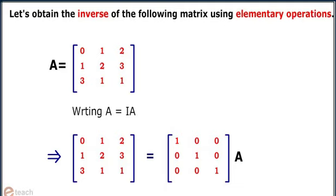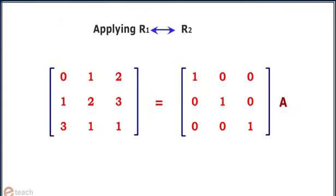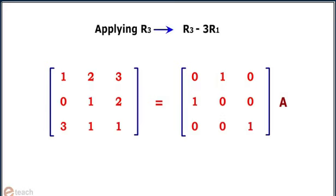We know that A is equal to IA. In mathematical form this can be written as follows. First let's interchange R1 by R2 in both the matrices. Now we replace R3 by R3 minus 3R1. On applying this we get...